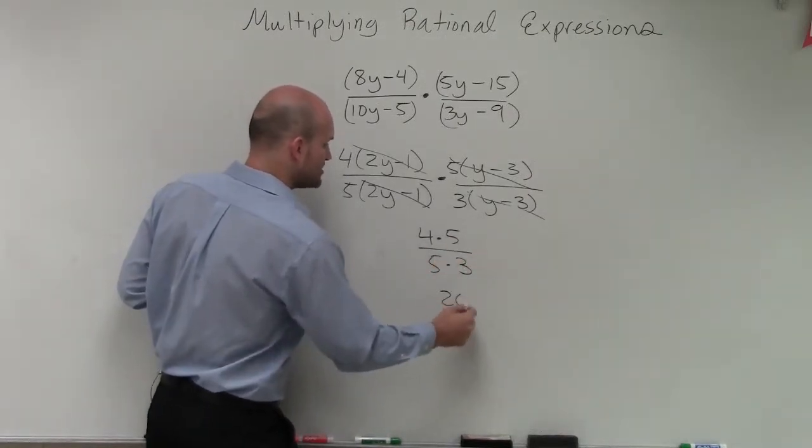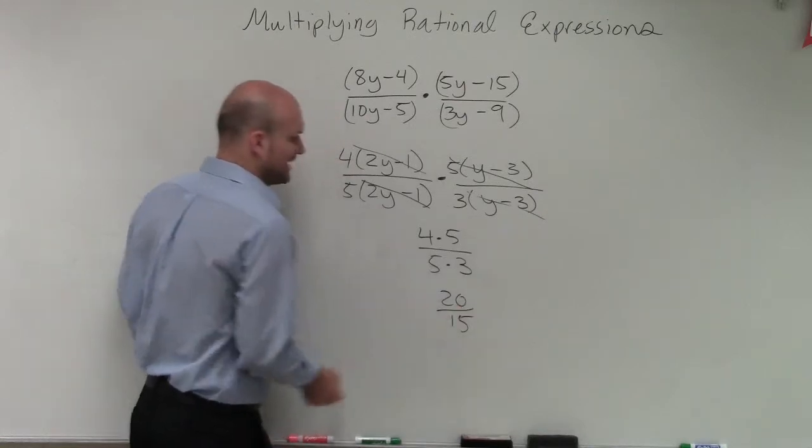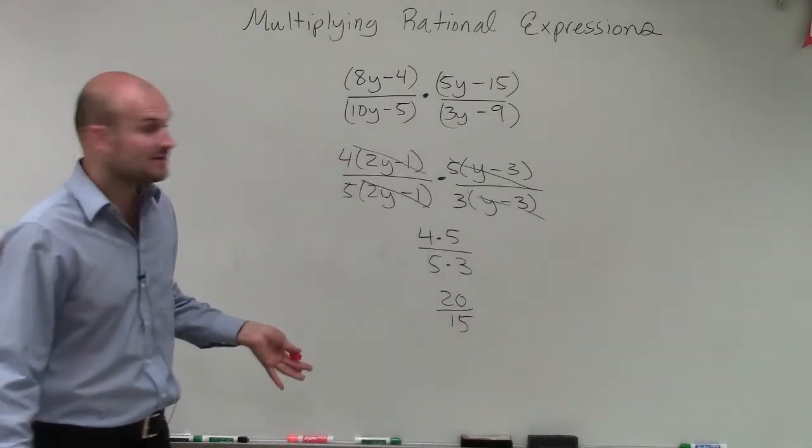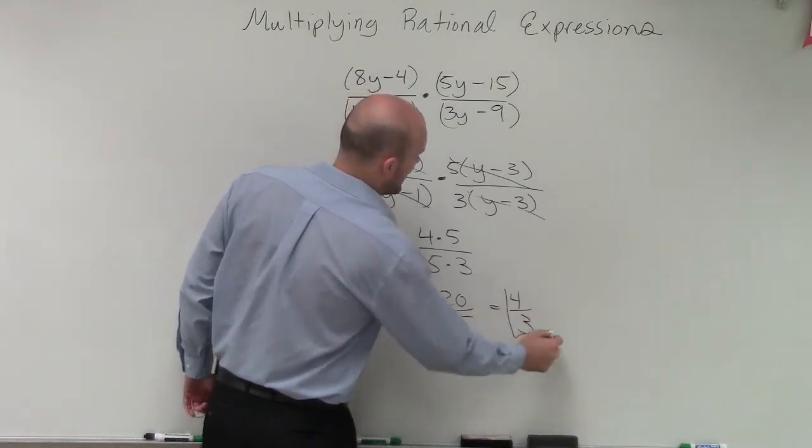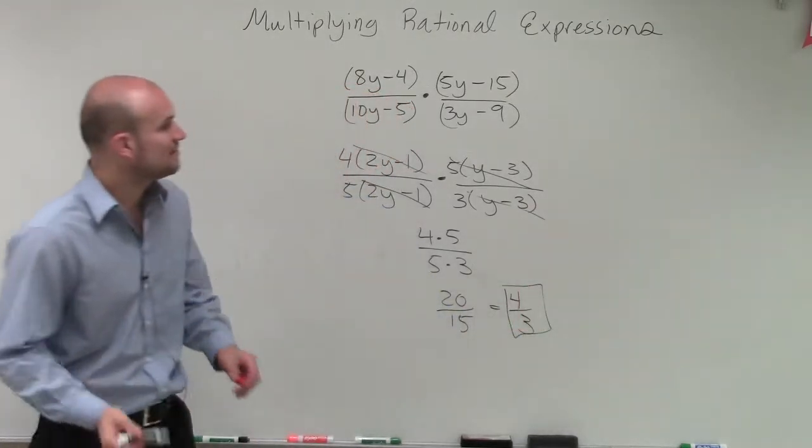Well, 4 times 5 is going to be 20 over 15. And then we can simplify that, right? Dividing by 5 on the top, which equals a positive 4 thirds. And that is going to be our final simplified answer.